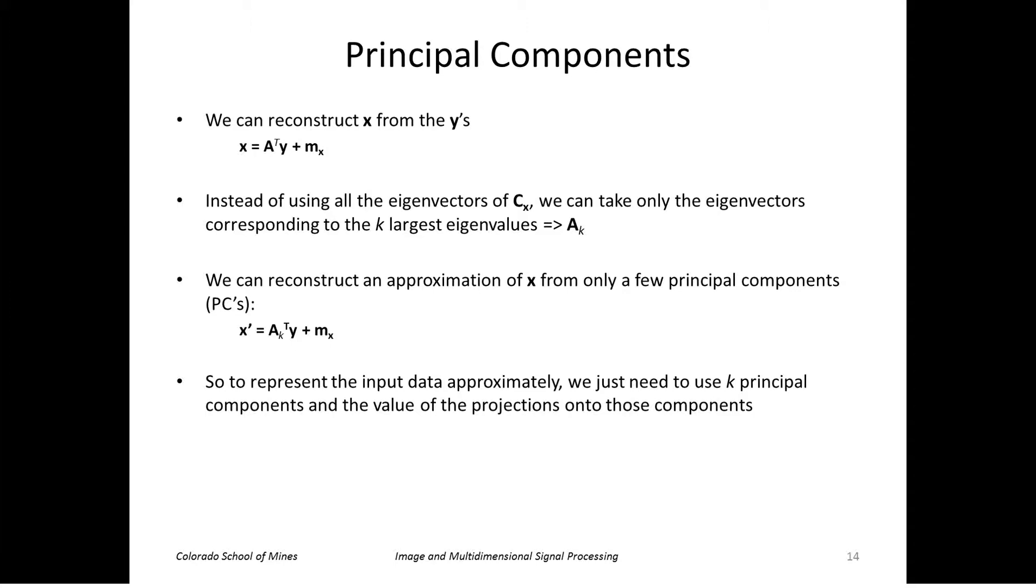The mean squared error is just x minus this approximated x, which is the same as taking the sum of the eigenvalues, all of them from one to n, minus the first k of them. So basically, the remaining eigenvalues that I'm not using, I sum those up and that is the resulting squared error.